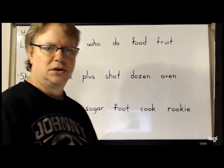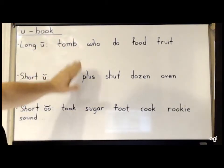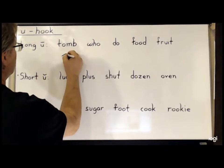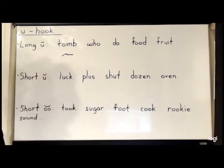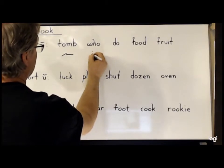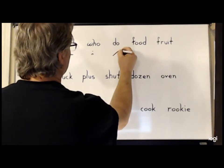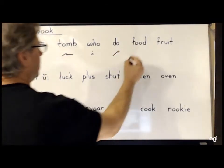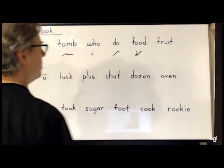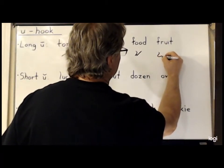Next is the U hook, and we will start with the long U sound in words like 'tune', which is T-U-M. 'Who' would be a dot for the H and then the U right below it. For 'do', simply D and the U hook. For 'food', F-U-D. For 'fruit', F-R-U-T.